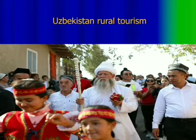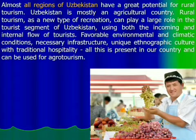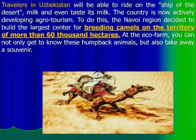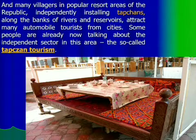Uzbekistan is famous for its agricultural products, and almost all regions of the country have great potential for rural tourism — especially its fruits. A particularly notable attraction is camel breeding: camels are raised on territories of more than 60,000 hectares, and visitors especially want to see camels in the desert.